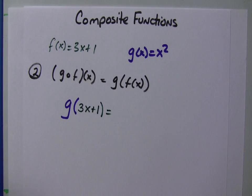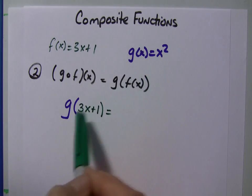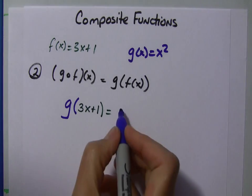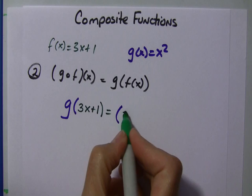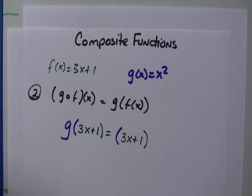And this is going to turn out to be, whenever I see an x in the g function, I'm going to put this. So, what we're going to get, we're going to get 3x plus 1 quantity squared.